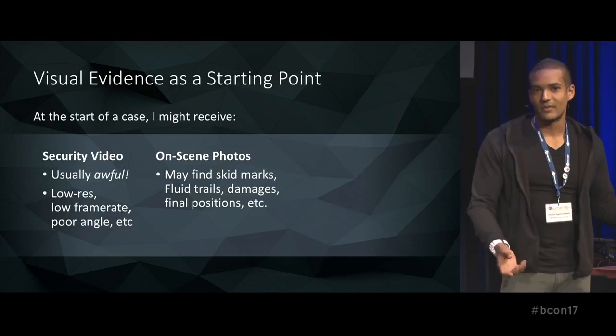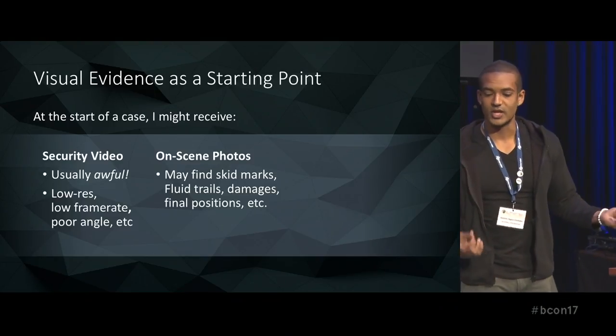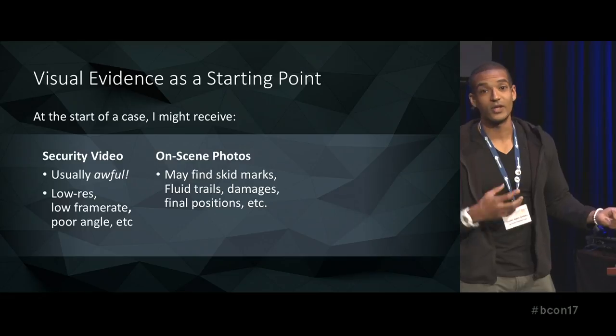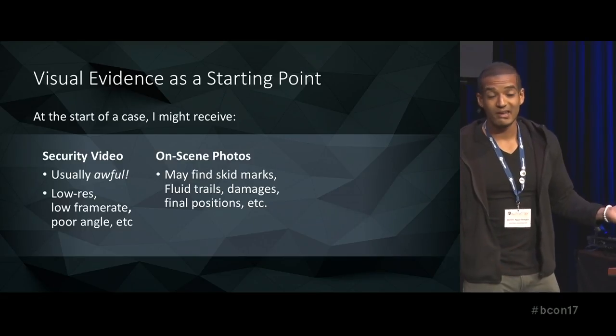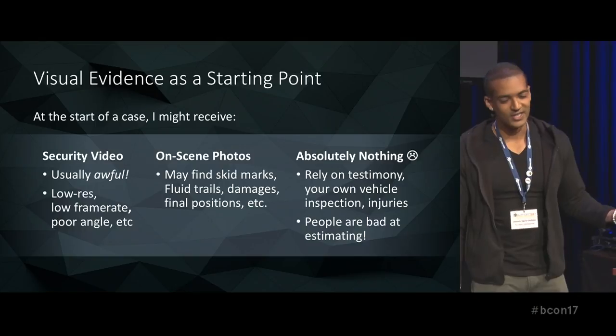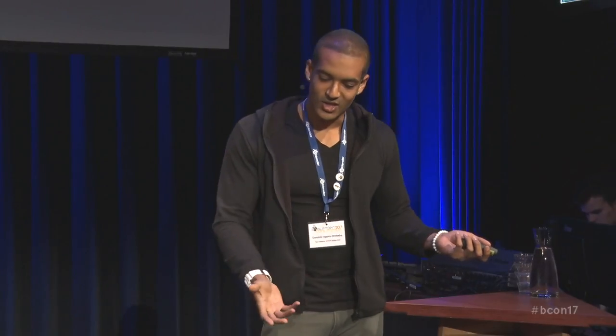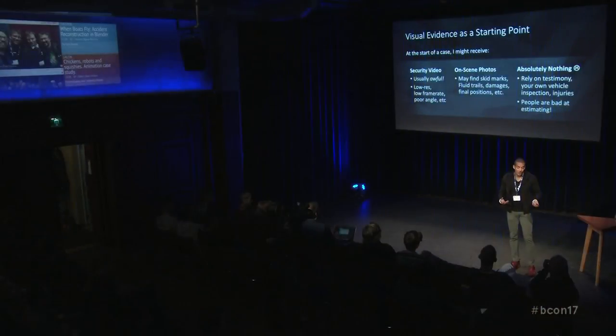On-scene photos are fairly common — you might find things like skid marks, fluid trails, the final vehicle positions. Or I might get nothing at all, which sucks but it happens. In that case you have to rely on witness testimony and your own measurements, but the problem is people are bad at estimating speed, distance, acceleration, deceleration, their reflexes, time — they will get all of it wrong. You have to take some of that with a grain of salt, but it's sometimes all you have.